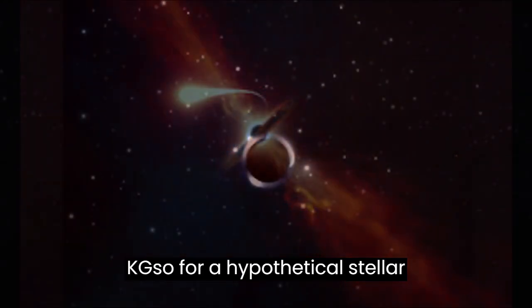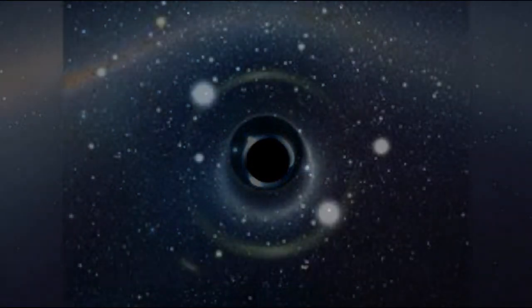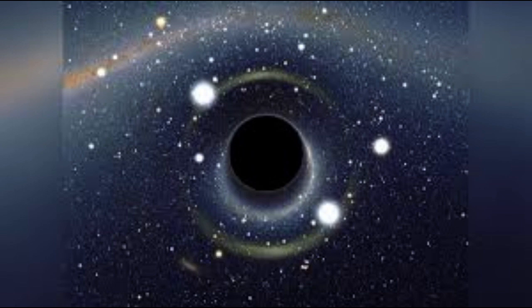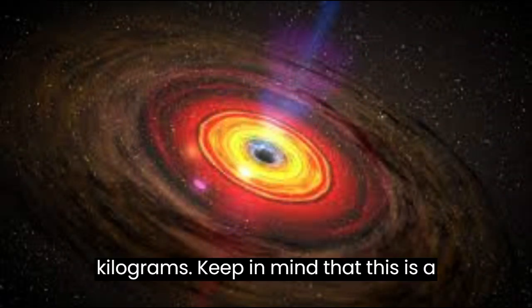So, for a hypothetical stellar black hole with a Schwarzschild radius of 10 kilometers, the mass would be approximately 5.302 × 10²⁶ kg.